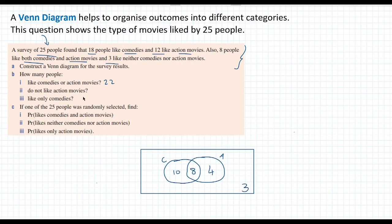How many people do not like action movies? Well, we know that 12 people like action movies. And there are 25 people in total. So 25 minus 12, that's 13 people. Another way to do it is to add up 10 and 3. So everyone outside the circle, the action circle. Like only comedies. So only comedies is 10 because these 8 people like comedy and action. So only people that like comedies is going to be 10.